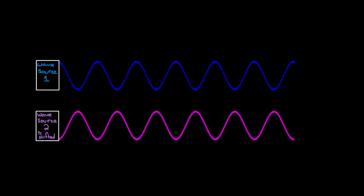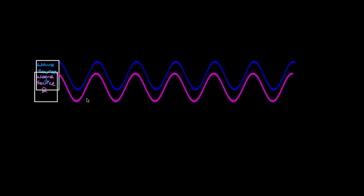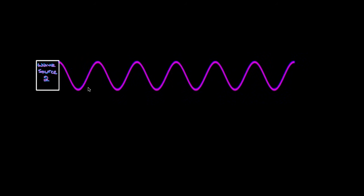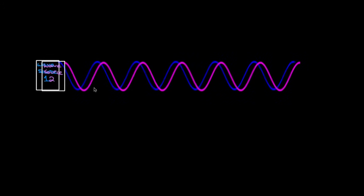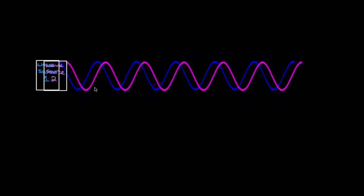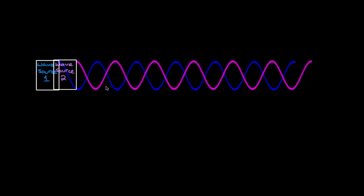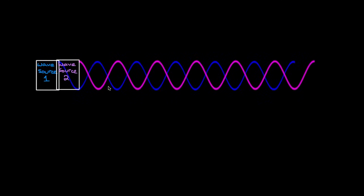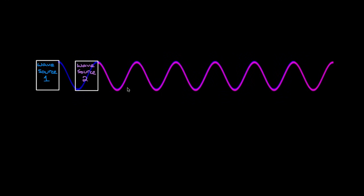Let me show you something interesting. If I've got wave source one, and I get wave source two back — the wave identical to wave source one — we overlap them and get constructive interference, because the peaks are lining up with the peaks and the troughs are matching up with the troughs. But as I move wave source two forward, they start getting out of phase. When they're perfectly lined up, we say they're in phase. Moving it forward enough, what was a constructive situation becomes destructive — all the peaks are lining up with the valleys, and they cancel each other out.